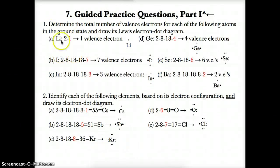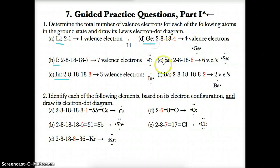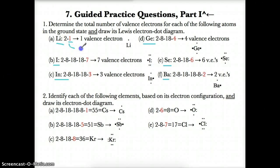Now with the guided practice questions part 1: determine the total number of valence electrons for each atom in the ground state and draw its Lewis electron dot diagram for Li, B/I, N, Ge, Se, and Ba. For each, write the ground state electron configuration, look at the last number to find valence electrons, then draw the diagram starting at north going clockwise. For Li, the last number is 1, so it has 1 valence electron. Write the symbol Li in the middle and draw 1 valence electron at north. For Bi, the last number is 7 — wait, the symbol is I here — so 7 valence electrons: write the symbol, then go north, east, south, west for 4, then north, east, south for 7.